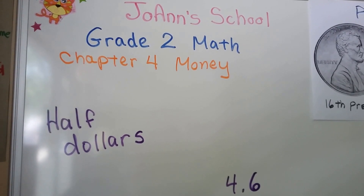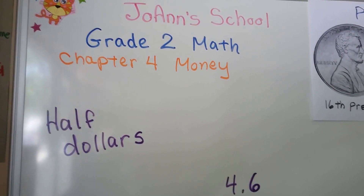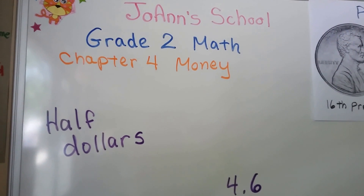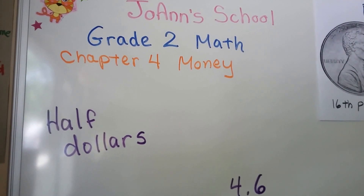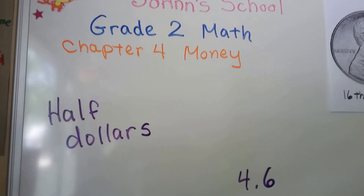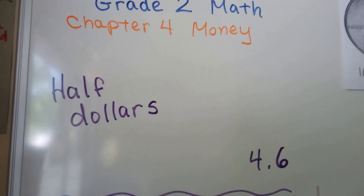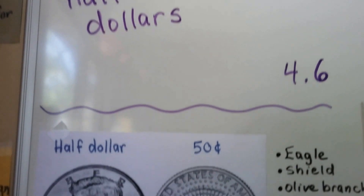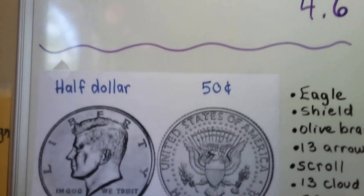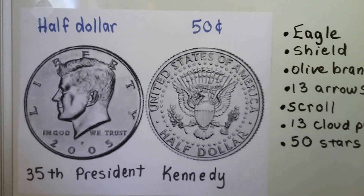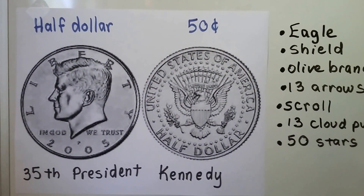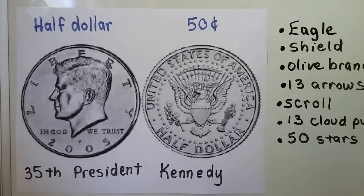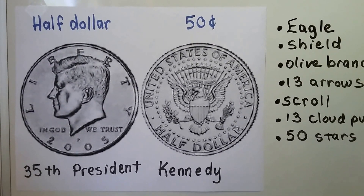We're going to talk about another coin, the half dollar, in this video. We're at lesson 4.6. This is what it looks like in the front and the back — a half dollar is 50 cents.